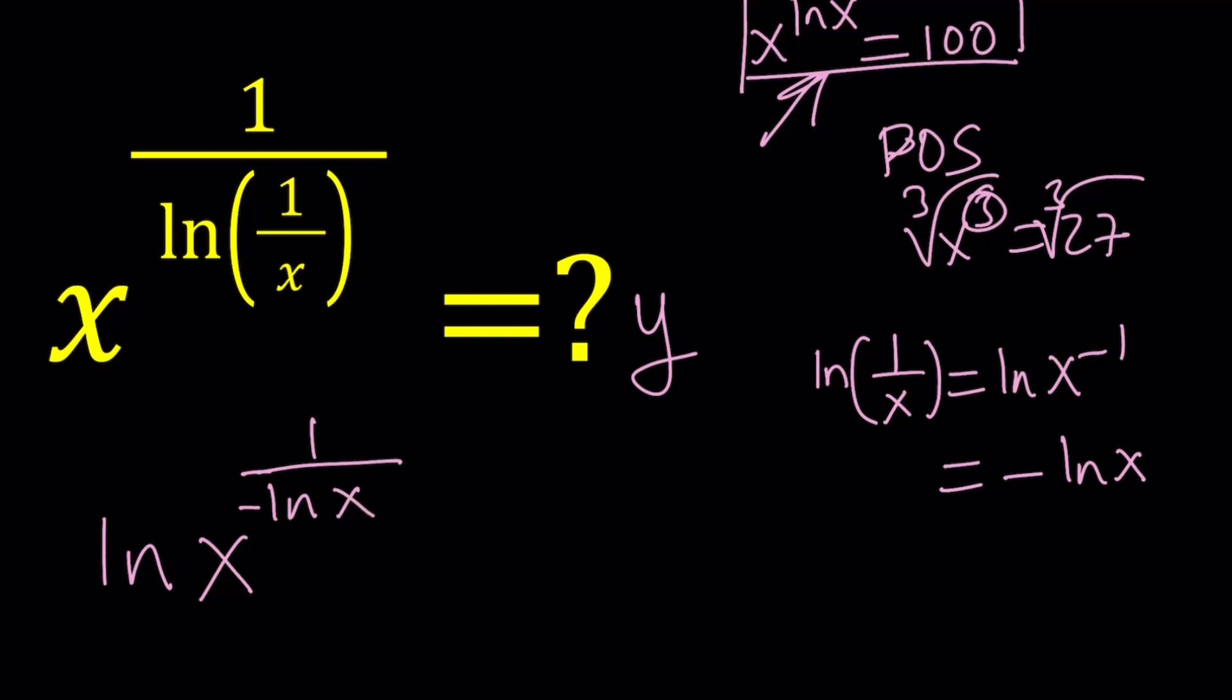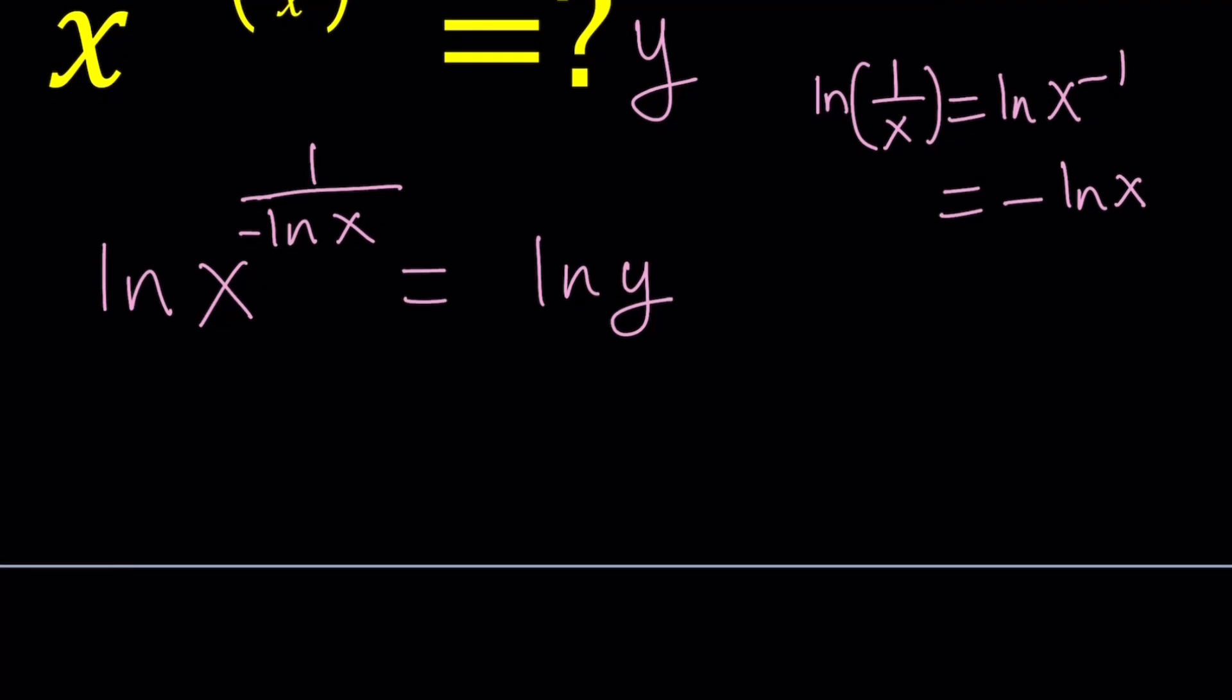Notice that if you have the log of a reciprocal, it's just the opposite of the log of the number. So kind of like a rule. Anyways, this is what we have. And this is equal to ln y. Don't forget to log both sides. Sometimes I do.